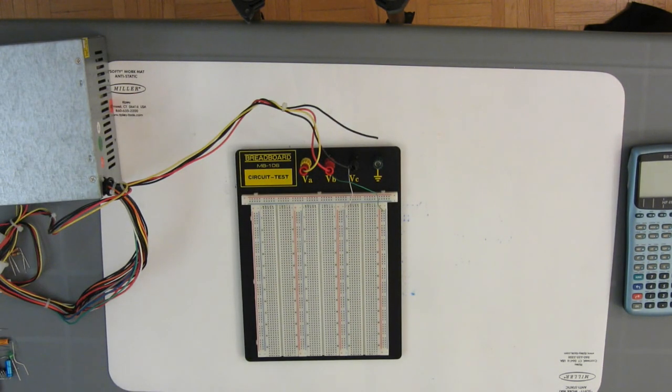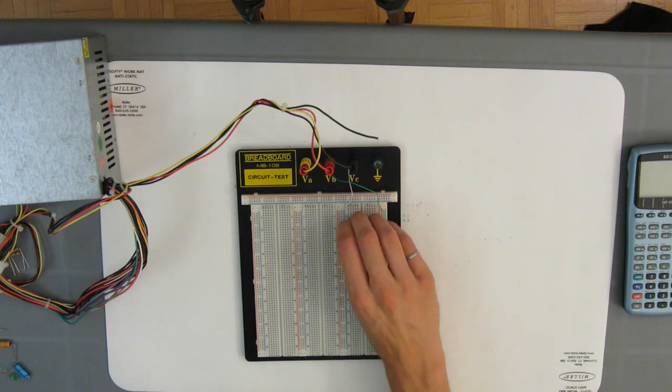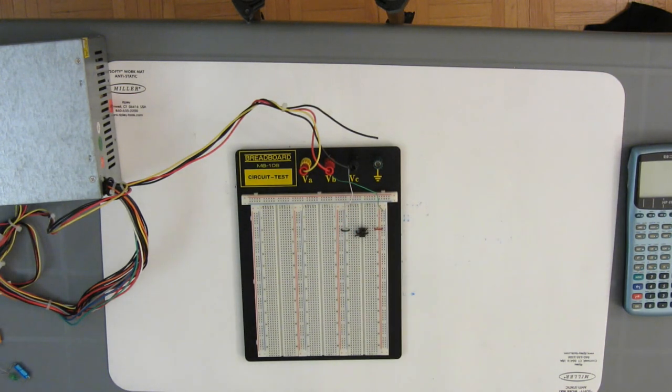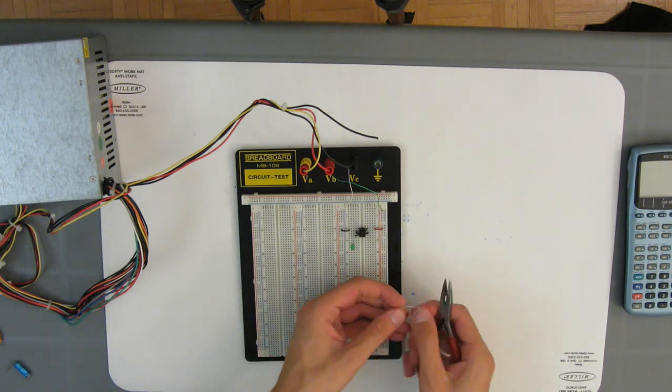Before we start, we want to make sure that the LED is going to blink about one or two times per second. Any more, and it's going to be too fast for us to count by hand. Any less, and we're not going to get a very precise result. So how do we do that?